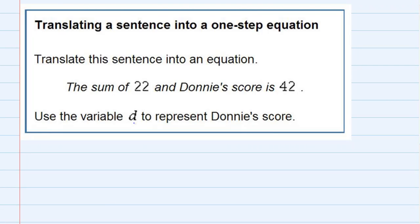Translating a sentence into a one-step equation. We're asked to translate the sentence into an equation, and we're told to use the variable D to represent Donnie's score. So it says the sum of 22 and Donnie's score is 42.